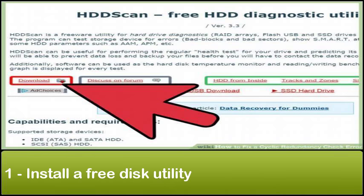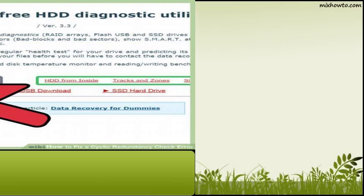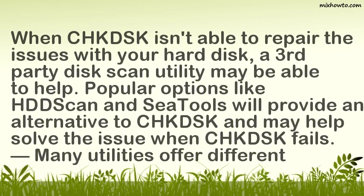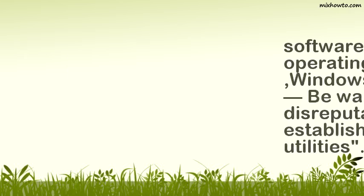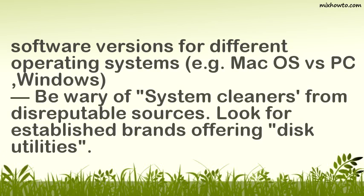Method 2: Using a Third-Party Disk Utility. Step 1 — Install a free disk utility. When CHKDSK isn't able to repair the issues with your hard disk, a third-party disk scan utility may be able to help. Popular options will provide an alternative to CHKDSK and may help solve the issue when CHKDSK fails. Many utilities offer different software versions for different operating systems, e.g. Mac OS vs. Windows. Be wary of system cleaners from disreputable sources — look for established brands offering disk utilities.